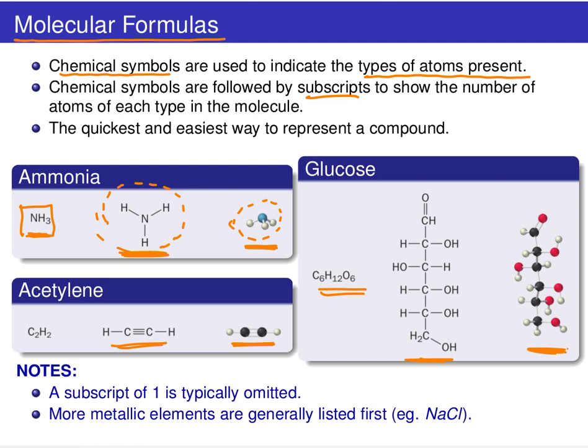And so remember the conventions when we're writing out these molecular formulas: subscripts of one are typically omitted, that's an implied one. And when you are listing out the different elements in a molecular formula, the convention is to list the more metallic elements first. It's just a general convention that we all try and follow.